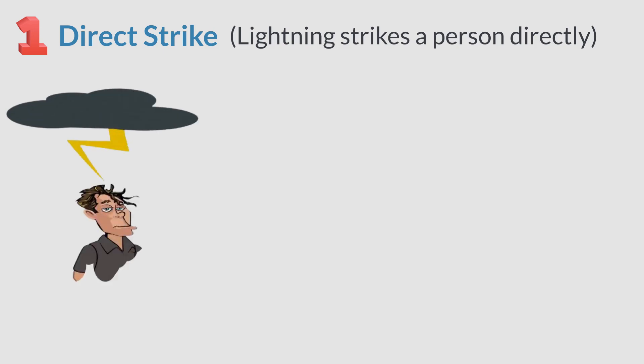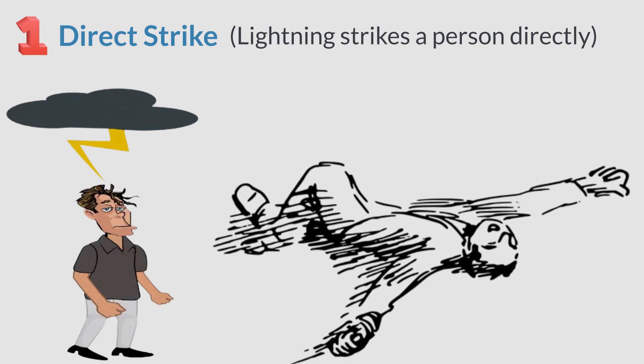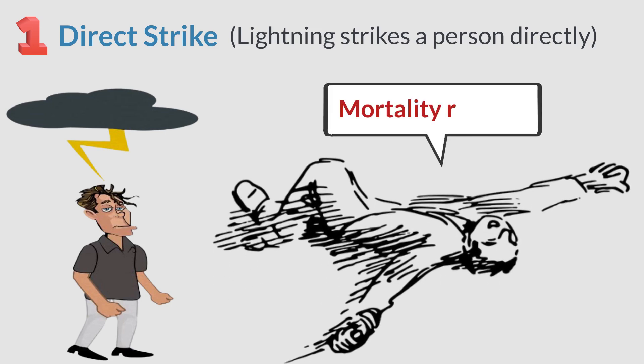The first is a direct lightning strike, which means that the lightning will directly hit the person. This is the most dangerous type of lightning, because the body must endure the entire powerful lightning. However, this is a rare type of lightning, and the mortality rate due to this form is very low, only 3%.